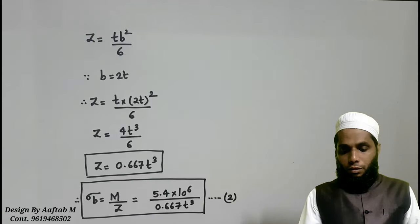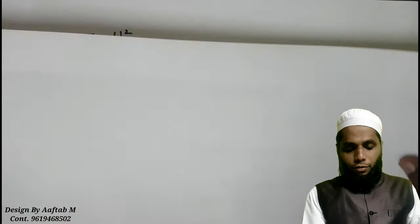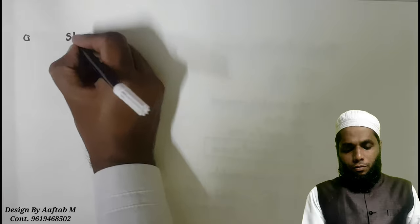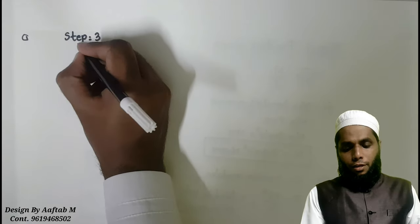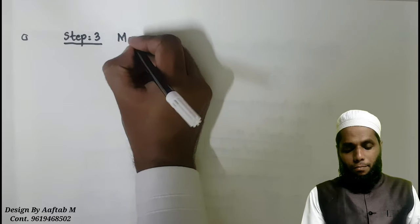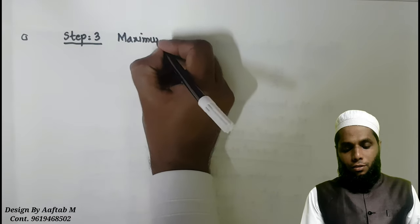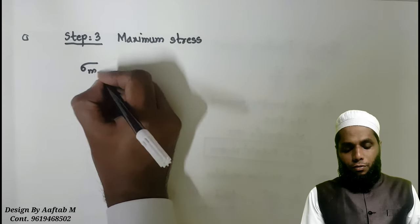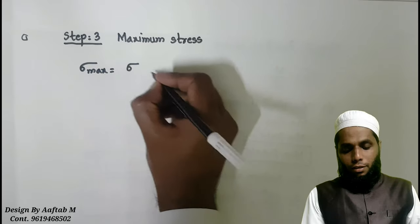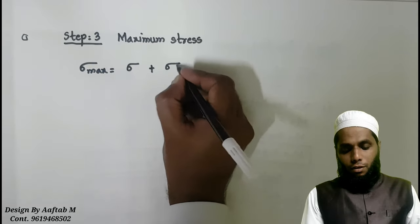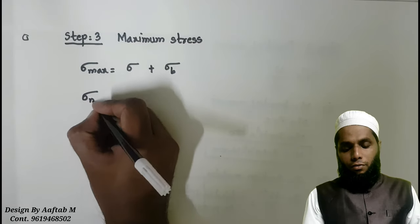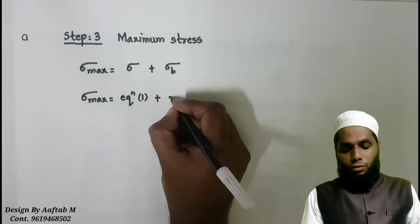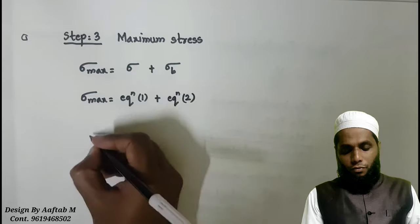Then, in last step, we will find out maximum stress. And maximum stress sigma maximum is found out as sigma plus sigma B. So, sigma max is again written as sigma. We have found out already in equation number 1. Then, sigma B in equation number 2. We will now substitute value of all 150 as sigma max.